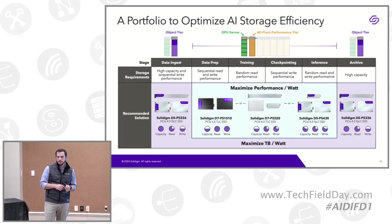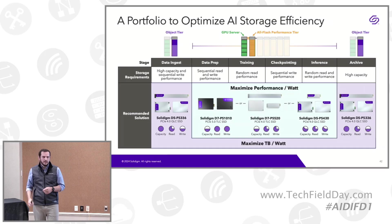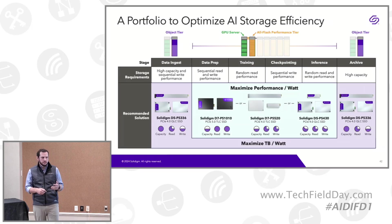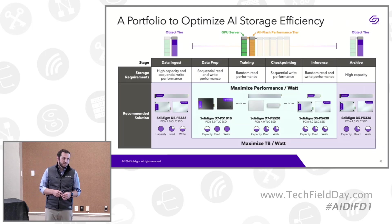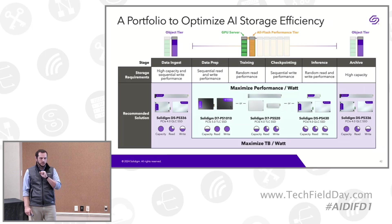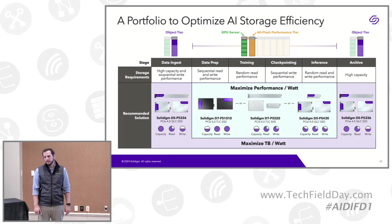In the middle of the pipeline you have options, and the blue box gets more complicated. It really depends on a customer's objectives. The Solidigm product portfolio is built so customers can make choices to optimize for different goals. We recently announced our flagship Gen5 TLC SSD, the D7-PS1010, or the D7-PS1030, which is the higher-endurance version. That's our performance leader — 14.5 gigabytes per second sequential read.